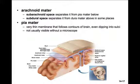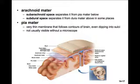The next layer down is the arachnoid mater. The space beneath it is called the subarachnoid space. This is the space between the pia mater and the arachnoid mater. The subdural space is going to separate the arachnoid mater from the dura mater above it. Pia mater is a very thin membrane that follows the contours of the brain, very difficult to even separate it from the brain. It dips into each sulcus, and it's really not visible without looking under a microscope.